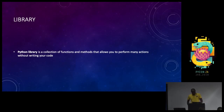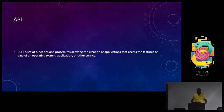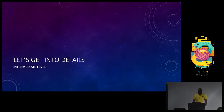The other keyword is library. A library — I just mean literally a Python library. By definition, it is a collection of functions and methods that allows you to perform many actions without actually writing the code. Then an API — how many people are familiar with APIs? I'll skip that part. Let's get into details.